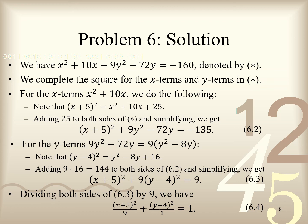Dividing both sides of 6.3 by 9, we get the standard form equation (x + 5)²/9 + (y - 4)²/1 = 1, which we label as 6.4. We're not quite done yet, since we still need to plot the graph of this ellipse in the XY plane. We shall do that next.